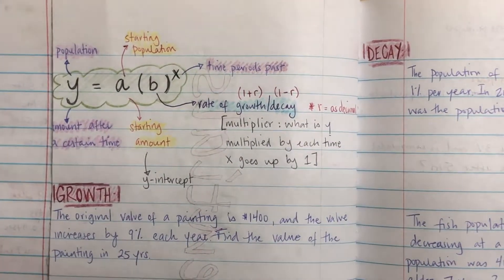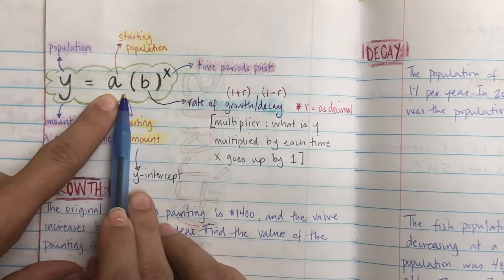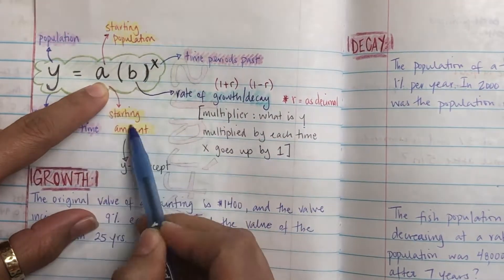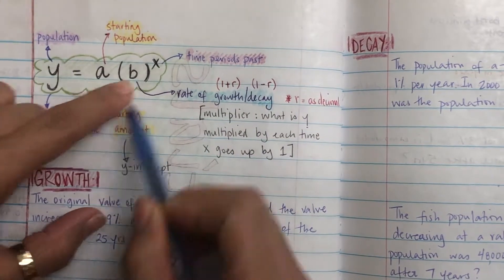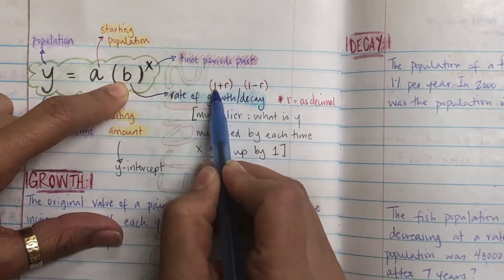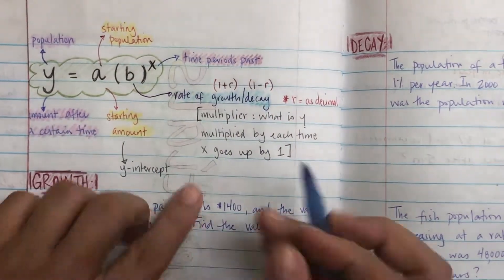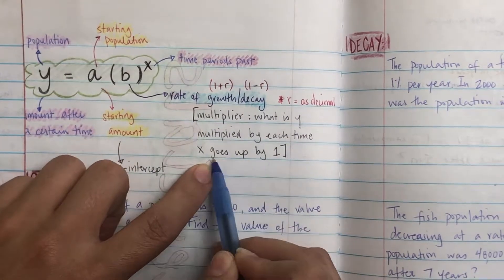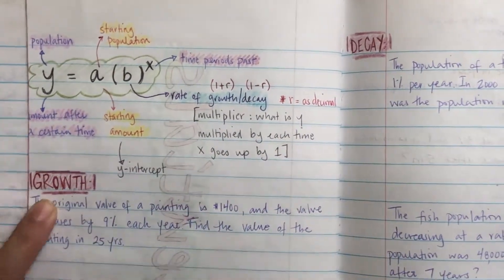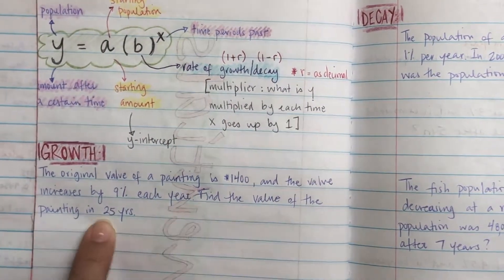This formula is going to be given to you in the formula sheet — you just need to know what everything means. So y equals a times B raised to the x power. Y is a population or the amount after a certain time. A is the beginning amount. B is the rate of growth or decay and it needs to be a decimal — very important. So if it's growth it's 1 plus r; if it's decay it's 1 minus r. And x is the time. These are multipliers — what y is multiplied by each time x goes up by 1 when you look at a table.